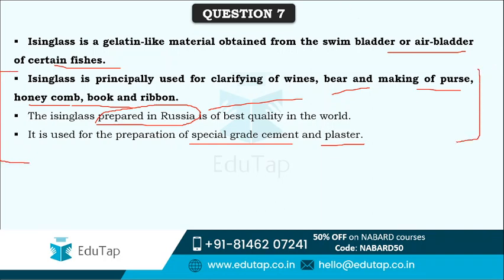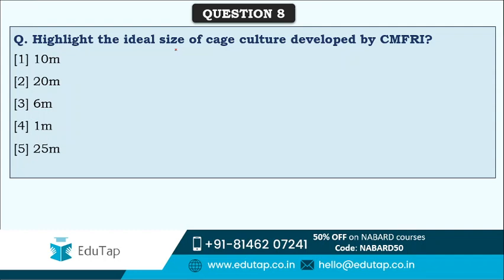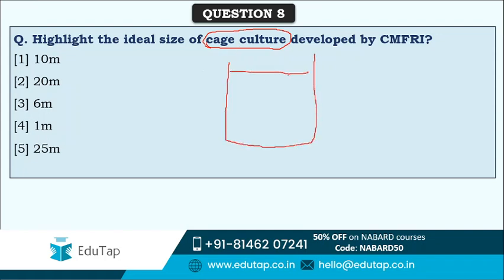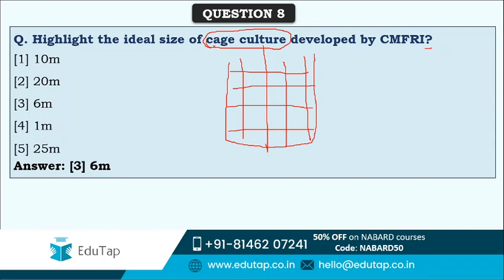Next question: what is the ideal size of cage culture developed by CMFRI? Sizes of cages or spaces required for animals are a favorite topic of NABARD, so please remember these because such questions are asked in both Phase 1 and Phase 2. I already showed you a picture of cage culture - it is where fishes are held in a cage. The correct answer is option three - six meters. Six meters should be the ideal size of cage culture developed by CMFRI.